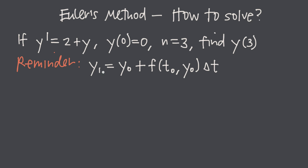The formula changes each time you apply it. You apply it multiple times in succession, always using your previous answer to come up with the next approximation. The formula for y₁ uses the previous value y₀. Then to find y₂ you use y₁, and so on. Everything bumps up by 1 each time — the values on the right-hand side are always 1 less than the value on the left.